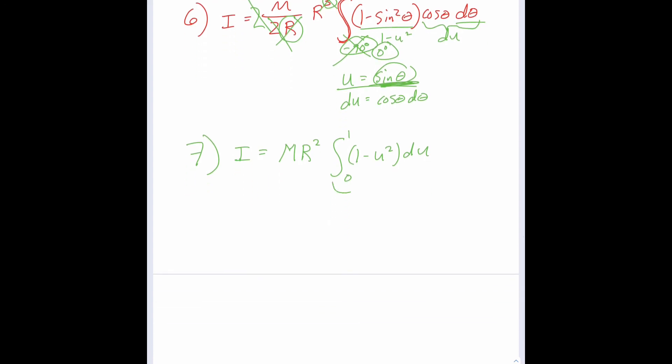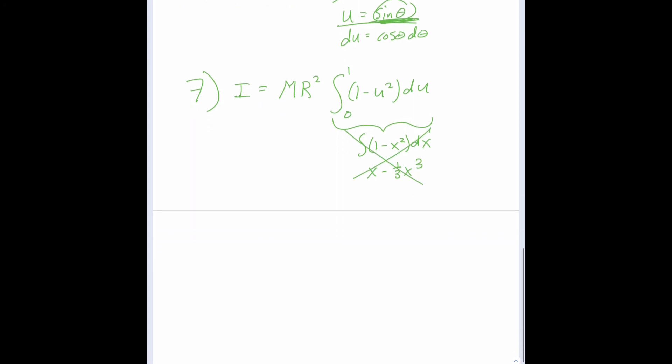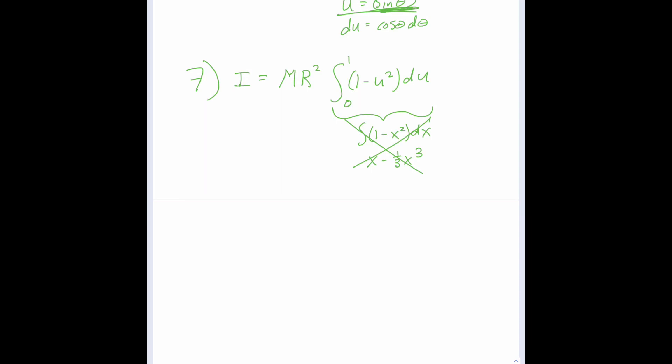So the integral of 1 minus u² du is the same as the integral of 1 minus x² dx. A variable by any other name would smell as sweet, as Shakespeare might say. So if we were to evaluate that integral, we'd be left with x minus 1/3 x³. So we can say the integral of 1 minus u² du is u minus 1/3 u³, and we need to evaluate that from 0 to 1.